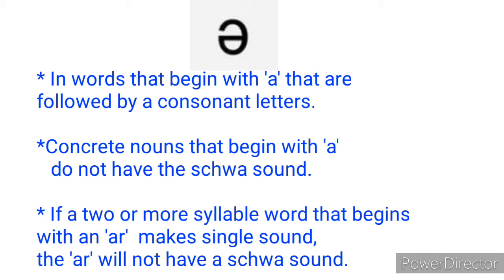The schwa sound is also found at the beginning of words. When a word starts with an 'a' followed by a consonant sound, there are actually three ways of pronouncing it: you can pronounce it as 'er' (schwa), as 'ah' (especially when followed by an 'r'), as a long 'a', or as a short 'a' like in act or accent. The tips I'll give you are not strict rules because there are exceptions — see them as tips.